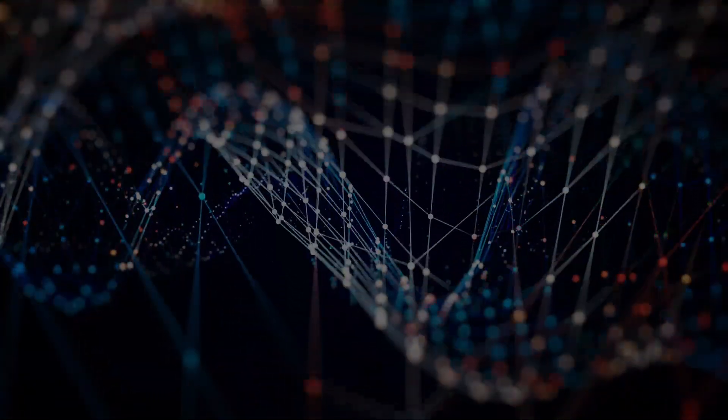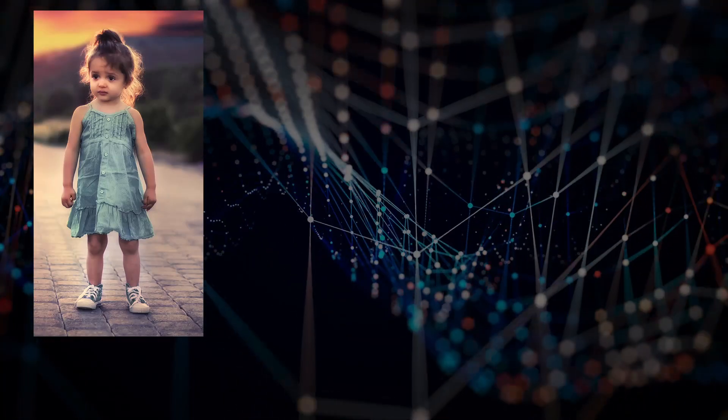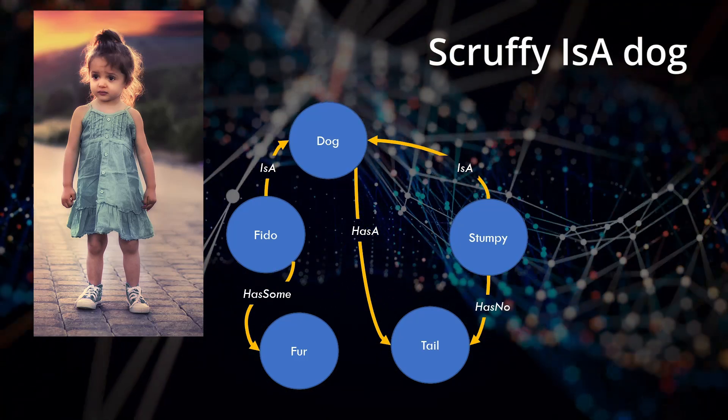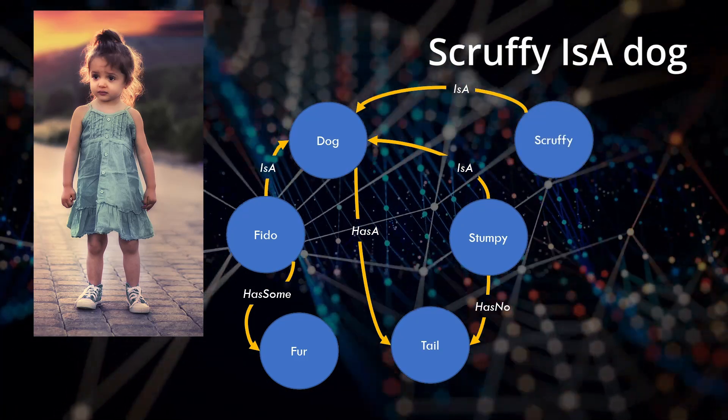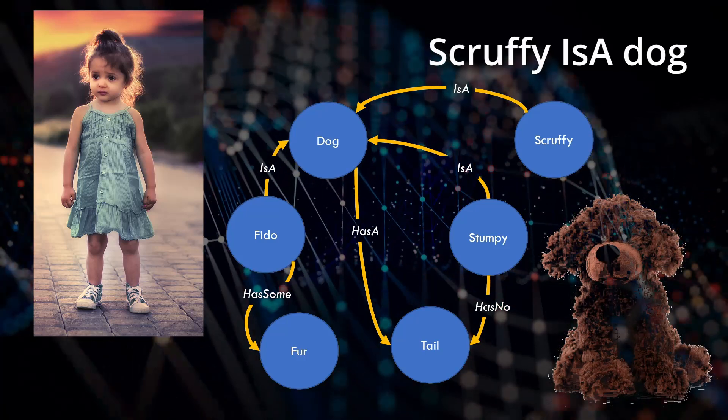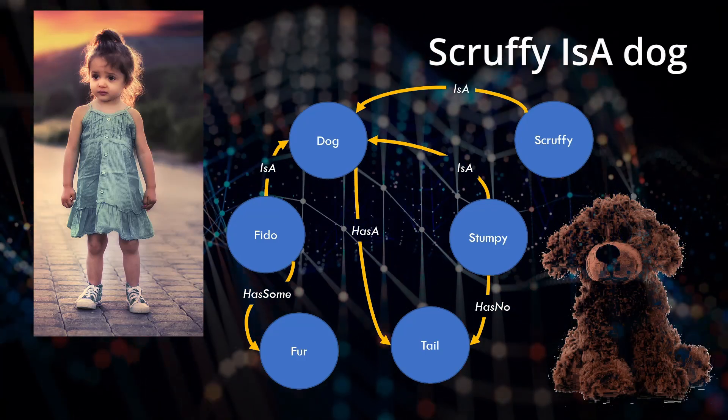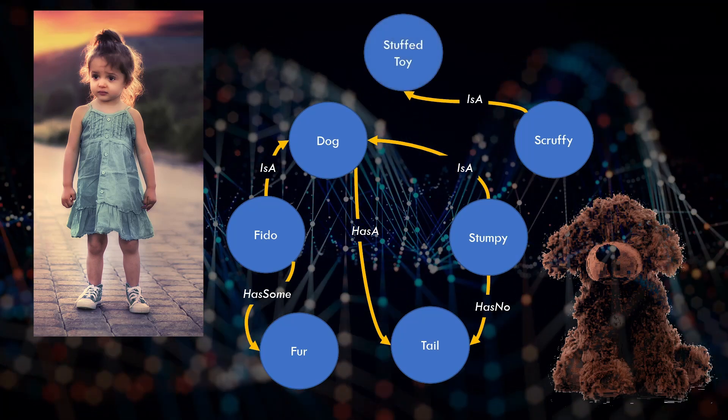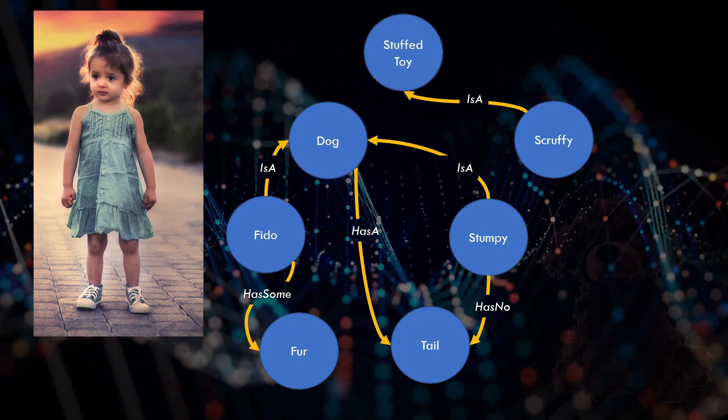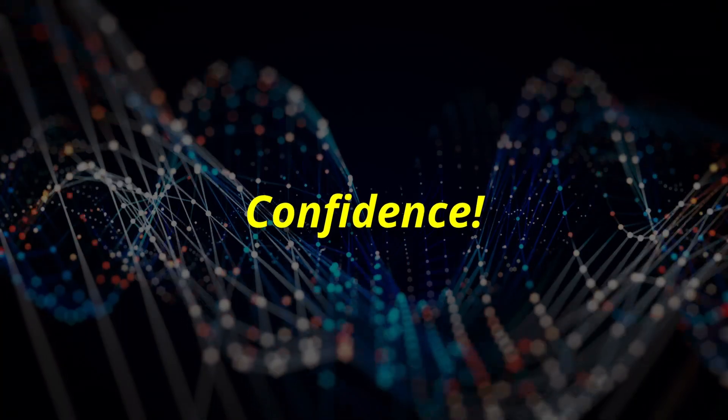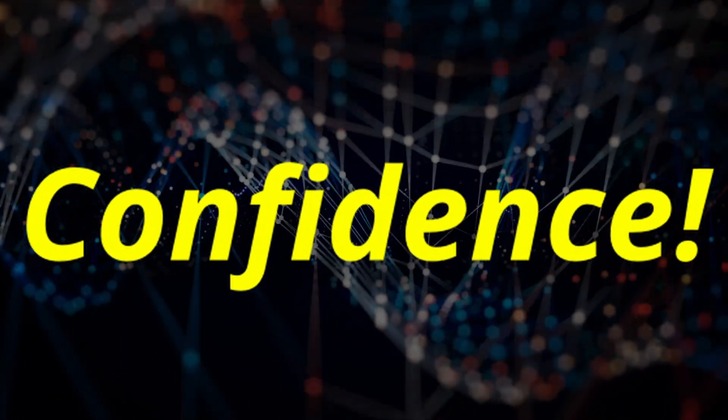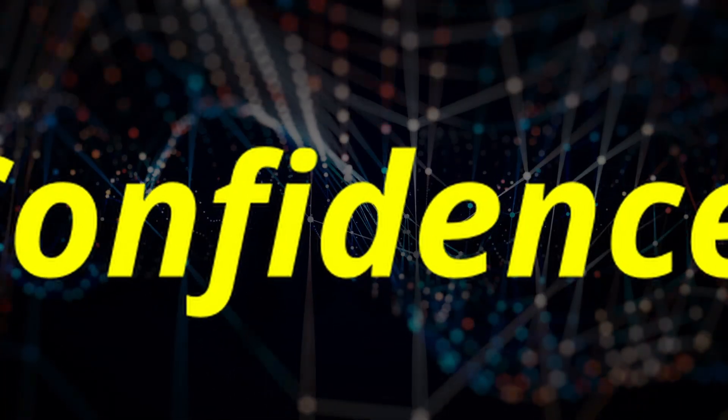As an example, suppose a four-year-old tells you that Scruffy is a dog. You immediately build a relationship, but when she shows you Scruffy, you learn that Scruffy is actually a stuffed toy with a minimal resemblance to a real dog. Are you surprised? Not really, because when a four-year-old tells you something, you don't have 100% confidence that the information is factual.